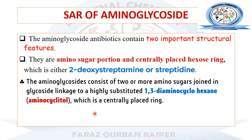Regarding the structure-activity relationship of aminoglycosides: let's divide the chemical structure of aminoglycosides into two different portions. The main two structural features are the amino sugar portion and the centrally placed hexose ring. Aminoglycosides consist of two or more amino sugars that are bonded to the centrally placed hexose ring by glycosidic linkage. The centrally placed hexose ring is the 1,3-diaminocyclohexane ring, more commonly known as the aminocyclitol, connected to the amino sugars by the glycosidic bond.